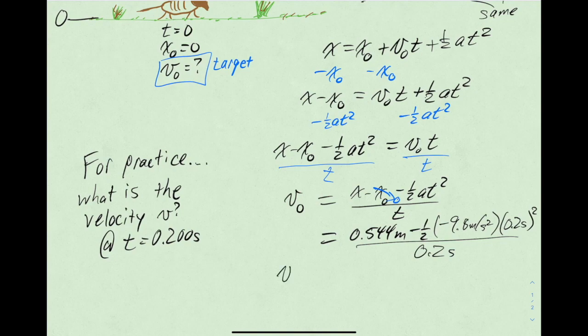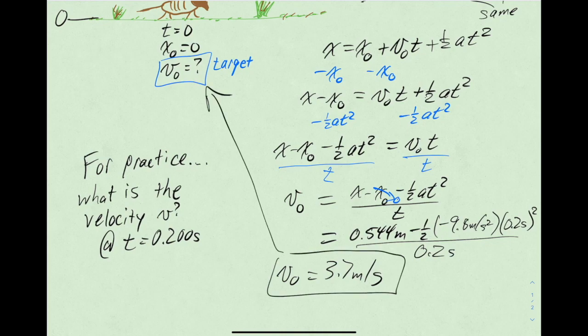So if you plug in those values, you'll get v_0 equals 3.7 meters per second. So that's the velocity of the armadillo when it first leaves the ground, and that was our target value.